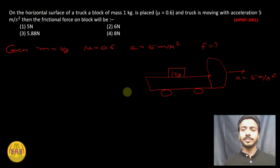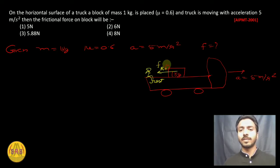So when we observe the object, when we do this, a pseudo force will act in this direction. The value will be m into a equal, and friction will act in this direction.